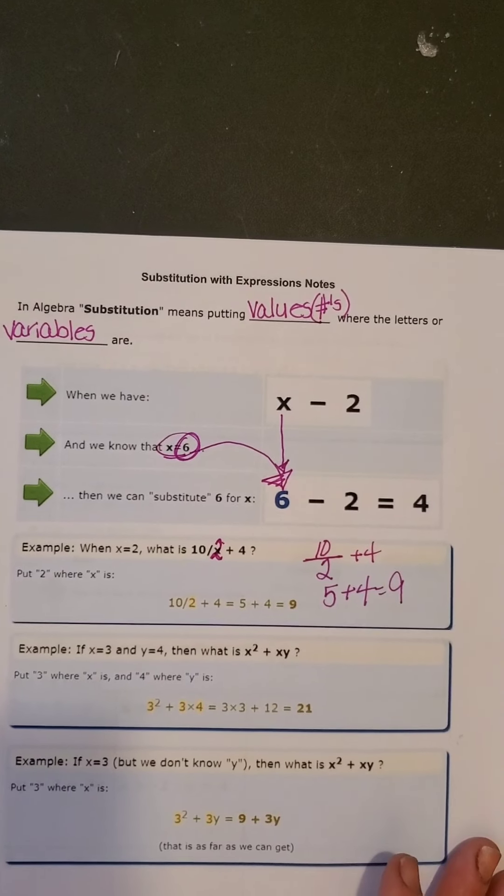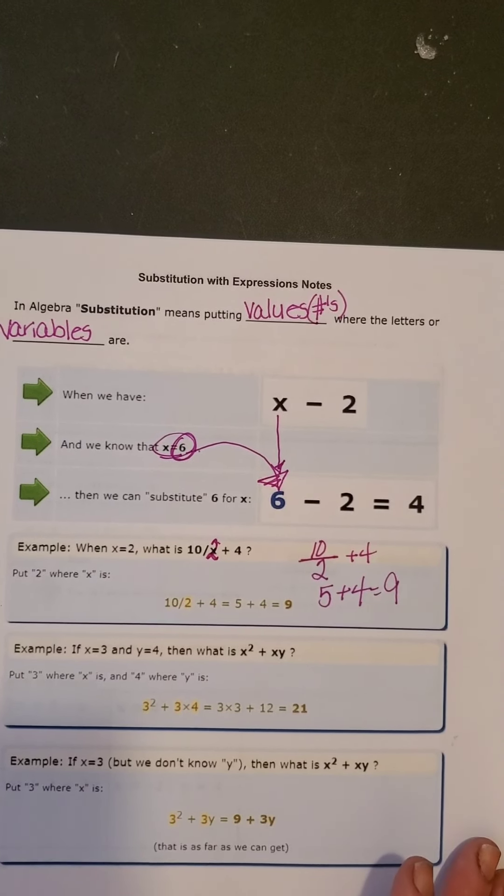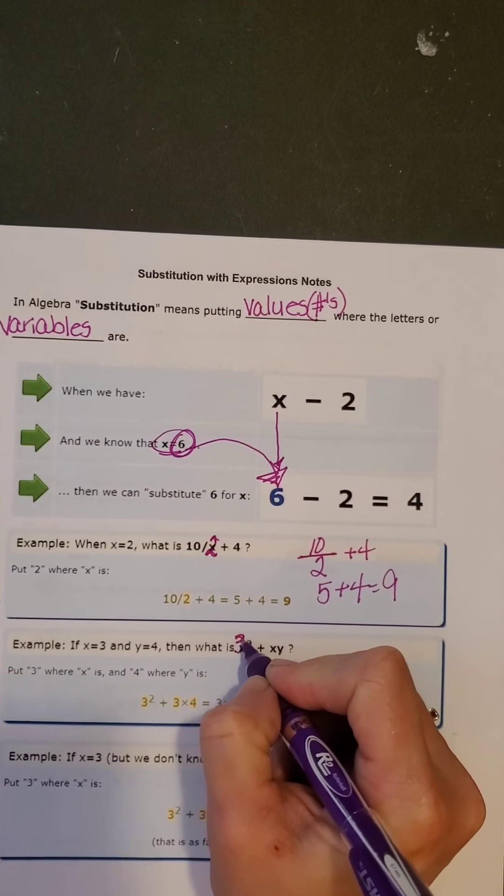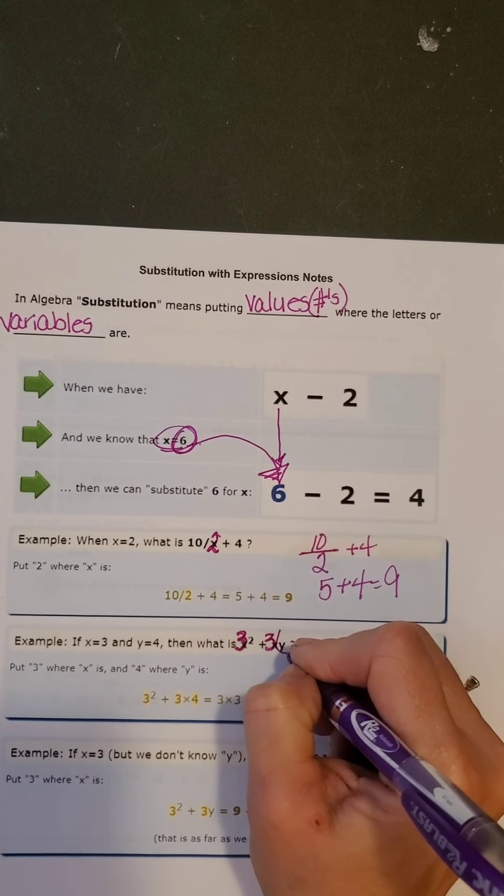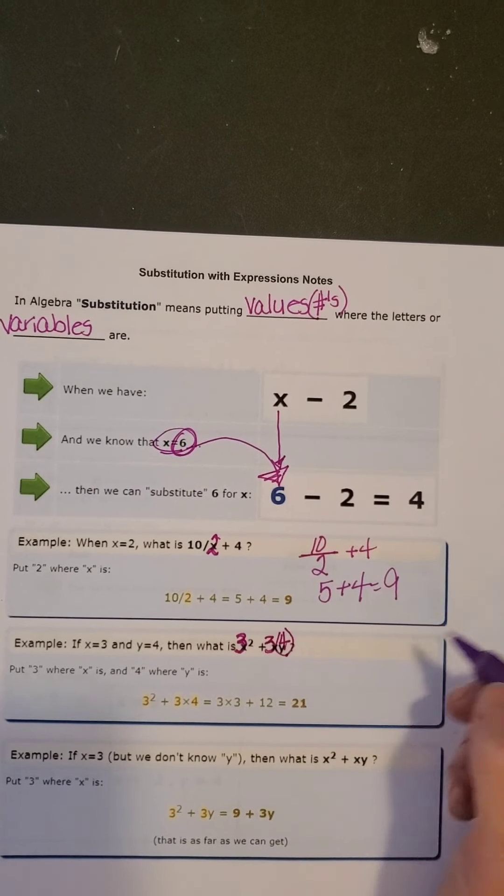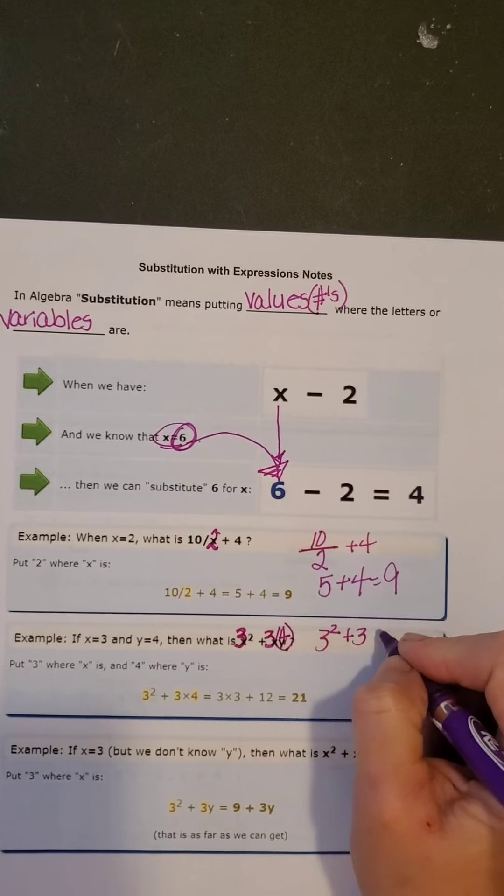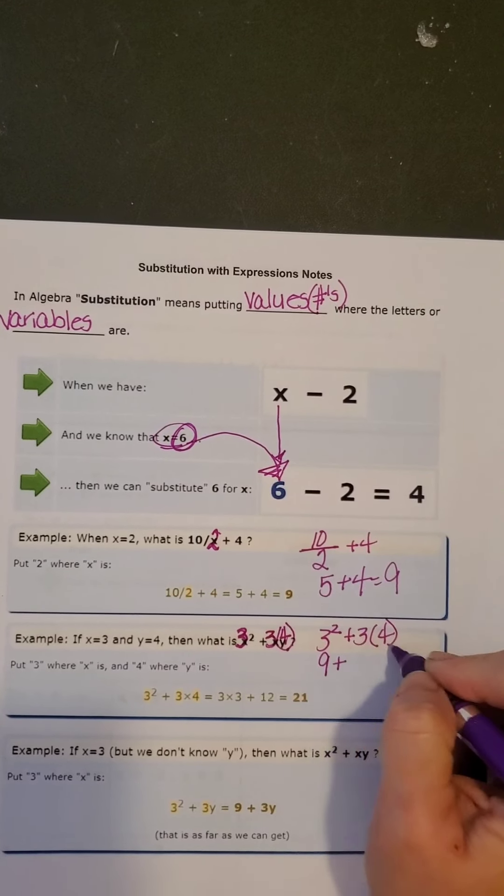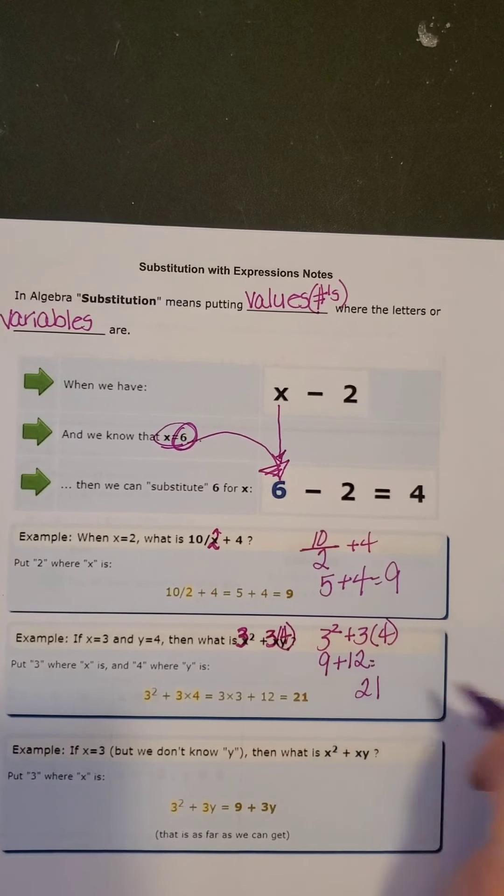If x equals 3 and y equals 4, then x squared plus xy is equal to what? So x is 3. So I am going to come right there and put a 3 right there. Then 3 times 4. So I have 3 squared plus 3 times 4. 3 squared is 9, 3 times 4 is 12, and 9 plus 12 is 21.